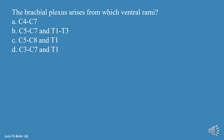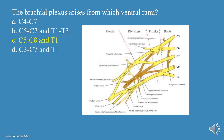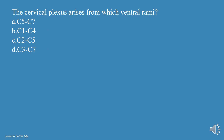The brachial plexus arises from which ventral rami? a. C4-C7, b. C5-C7 and T1-T3, c. C5-C8 and T1, d. C3-C7 and T1. The answer is c, C5-C8 and T1.